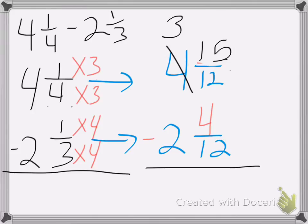Okay. 15 minus 4 is 11. So I end up with 11 twelfths. And 3 minus 2 is 1. So my answer is 1 and 11 twelfths.